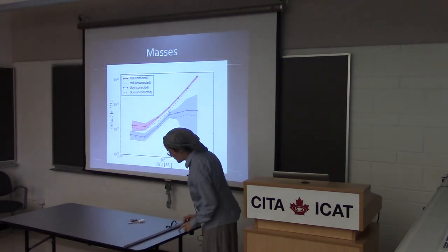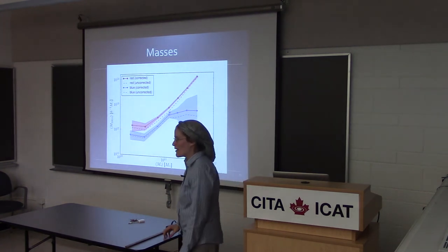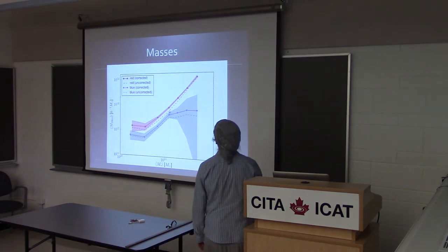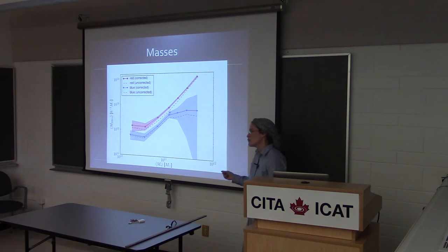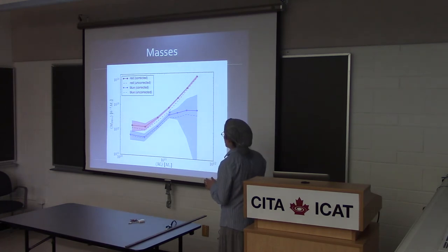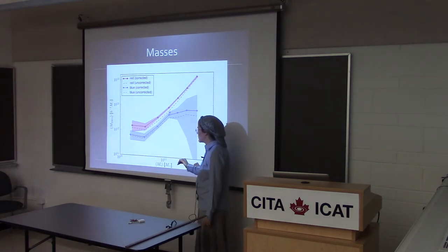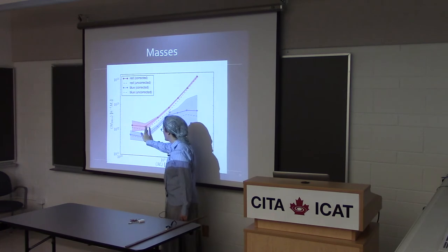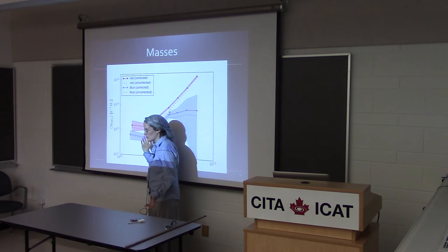A question about whether stellar masses are reliable. The stellar masses, like anyone's stellar masses, are not perfect. They have certain assumptions in their calculation. The majority of those assumptions would go the same way for both red and blue galaxies. A few systematics were potentially different for red and blue, but those were most important for the two data points where the errors are so big that we're not really making any conclusions anyway.